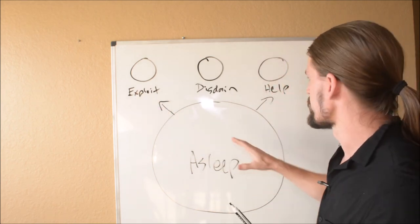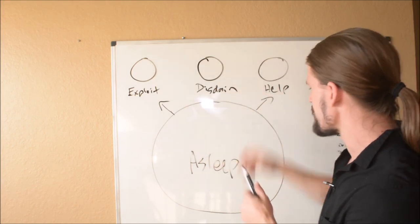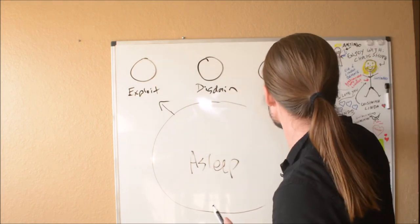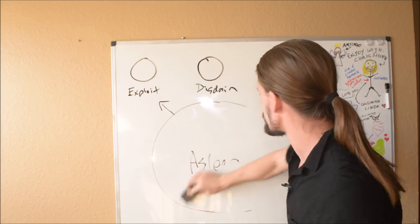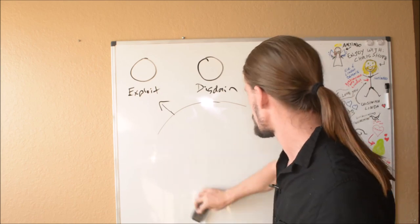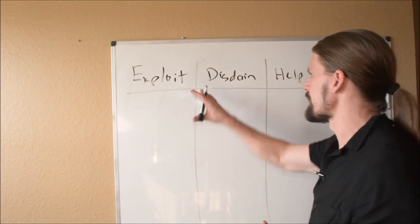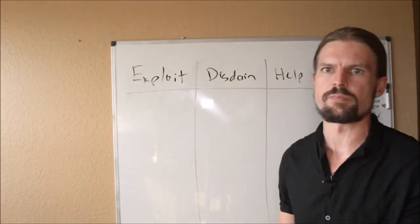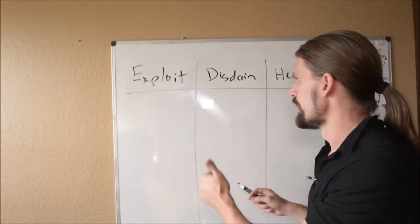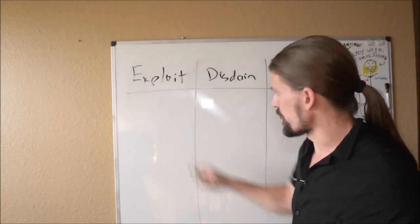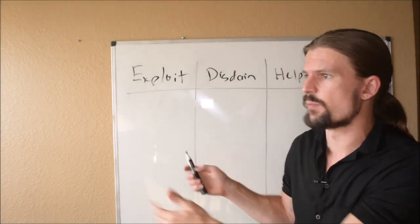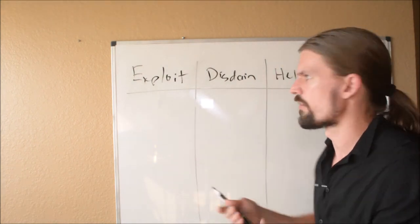They're not contributing one way or the other. They're just kind of sitting there aloof. So really, the fate of the world is determined by this tug of war between the exploiters and the helpers. And so I'm going to actually, of these people who are awake, the three categories, I'm going to show another diagram that's going to explain a little bit more detail here.